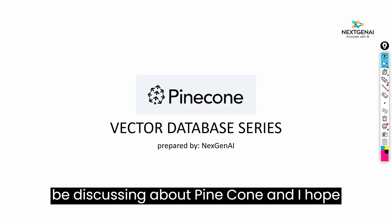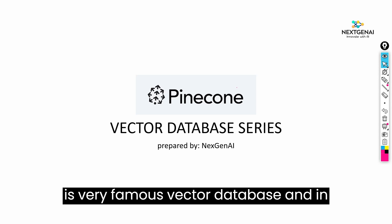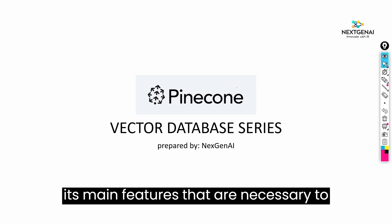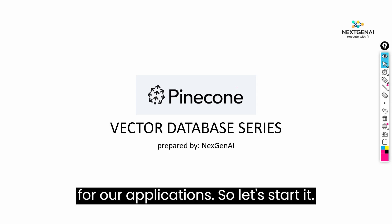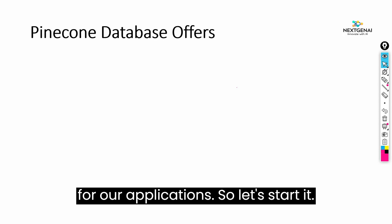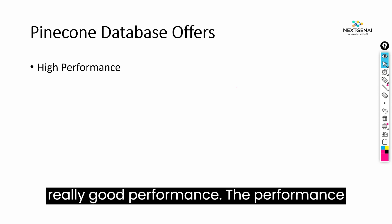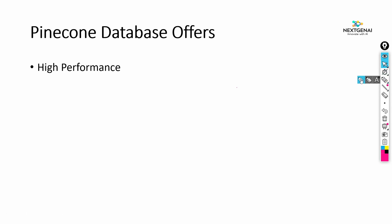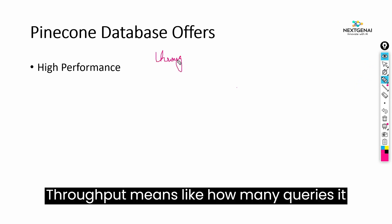We will be discussing Pinecone — I hope you guys have heard this name before. It is a very famous vector database. In this tutorial we will be discussing its main features that are necessary to know for using it in our applications. The first feature is that it provides really good performance. The performance of a vector database can be judged from its throughput — throughput means how many queries it is serving per unit of time.